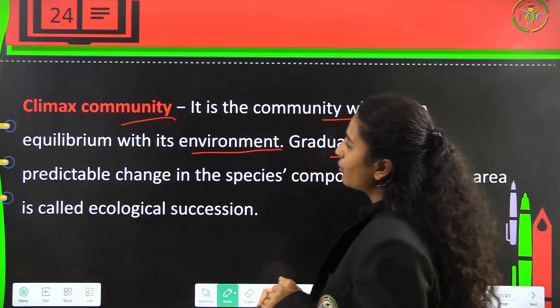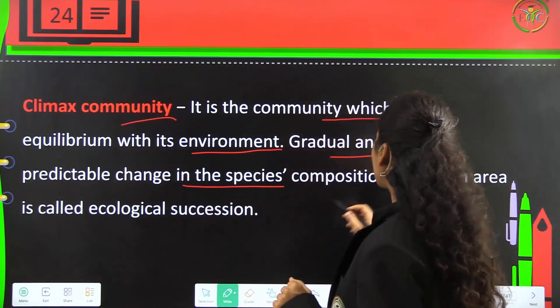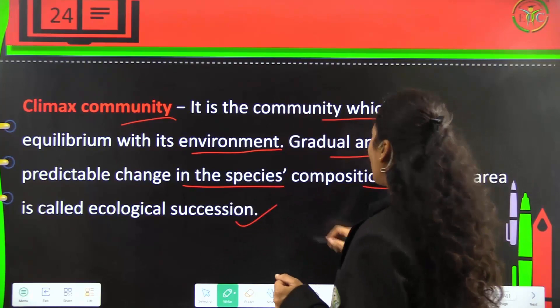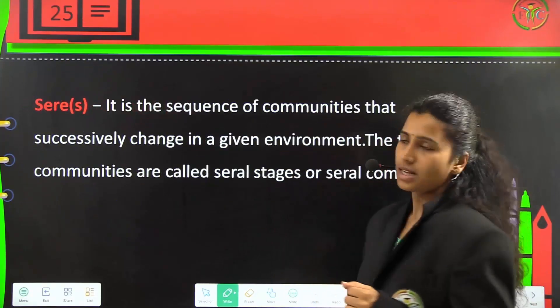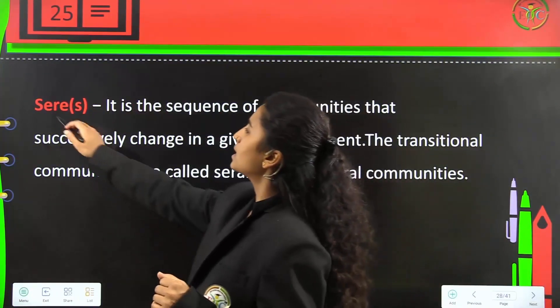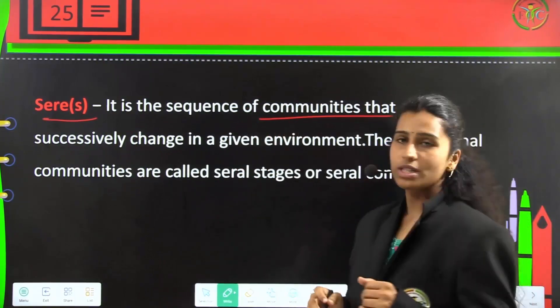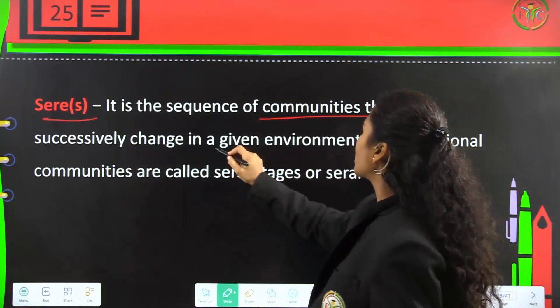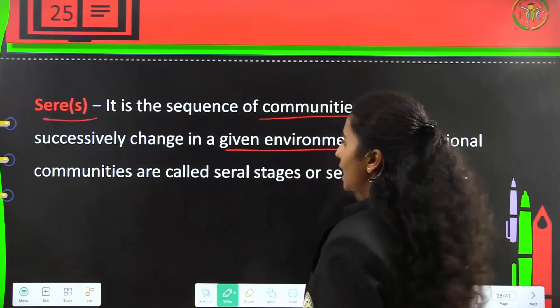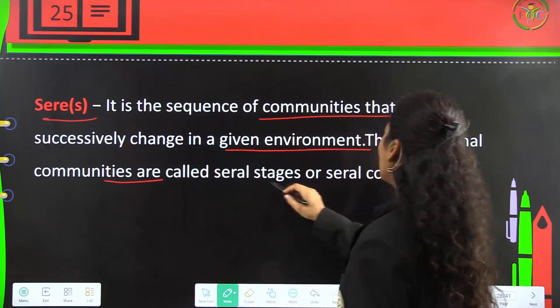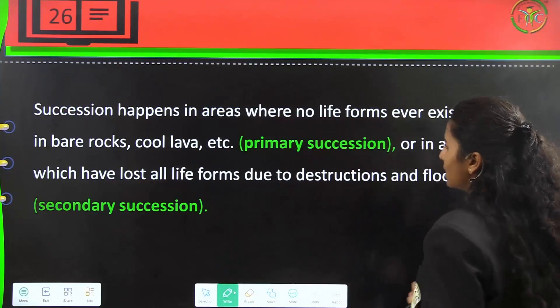Gradual and fairly predictable changes in the species composition of a given area is called ecological succession. The sequence of communities which are successively changing in a given environment includes transitional communities called seral stages or seral communities.